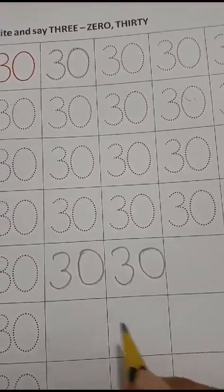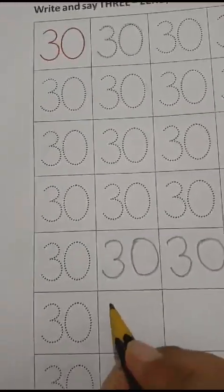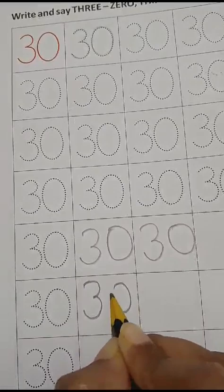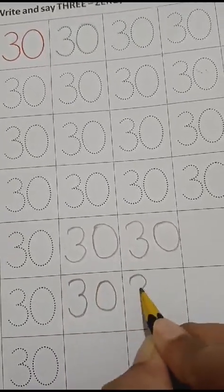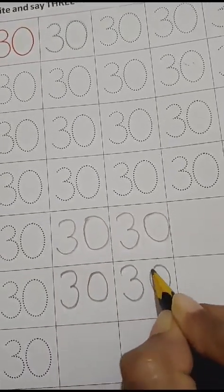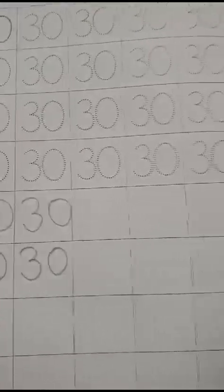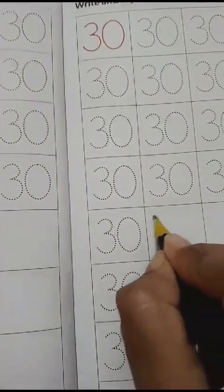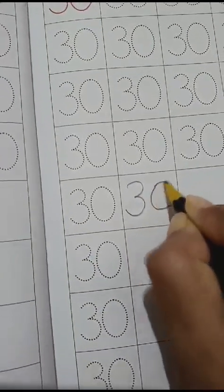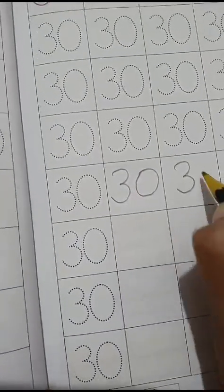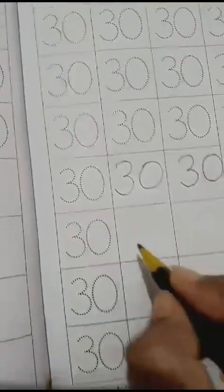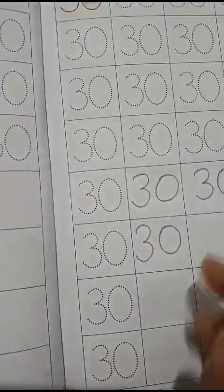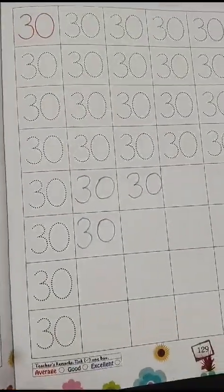ठीक है? फिर से देखो. 3, 0, 30. 3, 0, 30. ठीक है? और इस पेज में भी आपको ऐसे लिखना होगा. 3, 0, 3, 0, 3, 0. ऐसे करके 3, 0, 30 लिखना होगा.